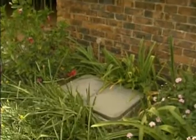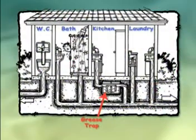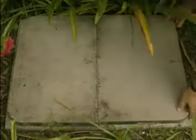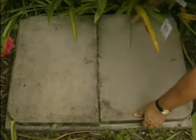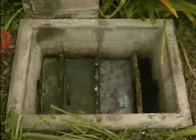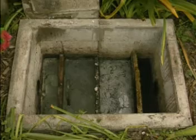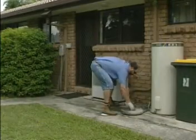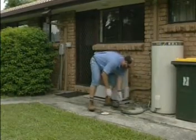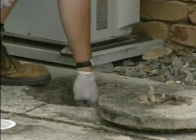The grease trap is often installed between the kitchen sink and the septic tank. The purpose of the grease trap is to collect grease, oils and fats from the kitchen sink, preventing them from being carried over to the septic tank. Grease traps are not always installed on septic tank systems as it depends on the size and type of the on-site sewage facility.